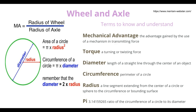There are a couple of terms that we need to know as we go through this series learning about the wheel and axle and other simple machines. One of the main things to understand is why we use simple machines — they allow us to gain mechanical advantage. Mechanical advantage is the advantage gained by the use of a mechanism in transmitting force. It doesn't decrease the amount of work being done, but it changes the level of force, making the job easier for the user.